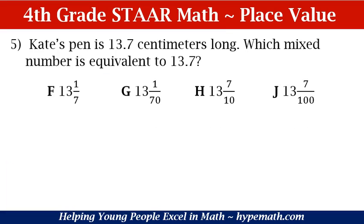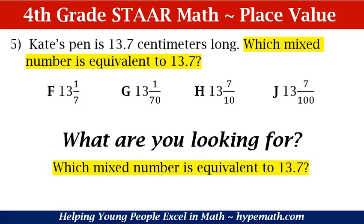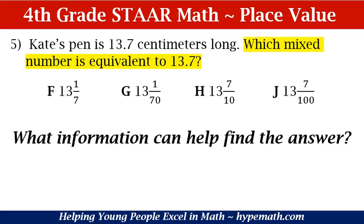Let's move to question number 5. Question number 5 says: Kate's pin is 13.7 centimeters long. Which mixed number is equivalent to 13.7? F: 13 and 1 sevenths. G: 13 and 1 seventieths. H: 13 and 7 tenths. What's our most important question to ask first? What are we looking for? We are looking for the mixed number that is equivalent to 13.7.